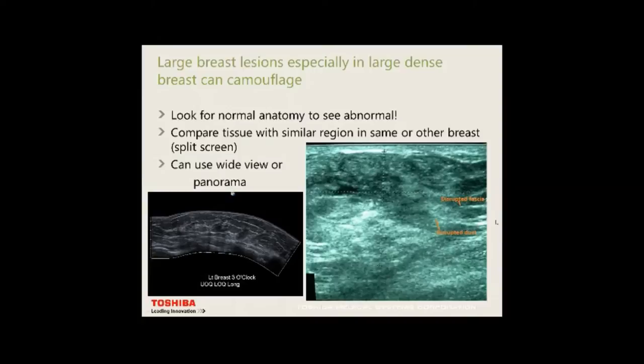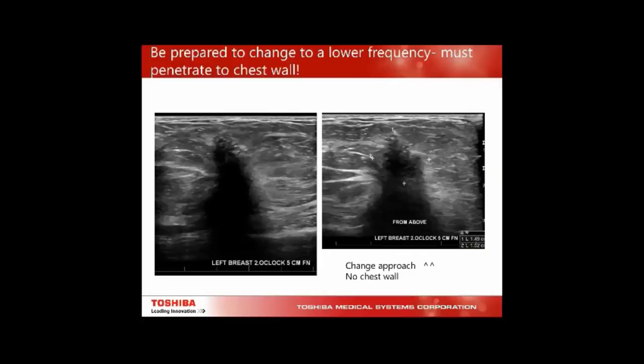With large breast lesions, you're identifying them by: disrupted premammary fascia, necrosis, disrupted ducts going through here and around the fascial layers. Sometimes you may use a wide view or panorama technique — wonderful but requires practice. Be prepared to change to a lower frequency; you must penetrate to the chest wall.